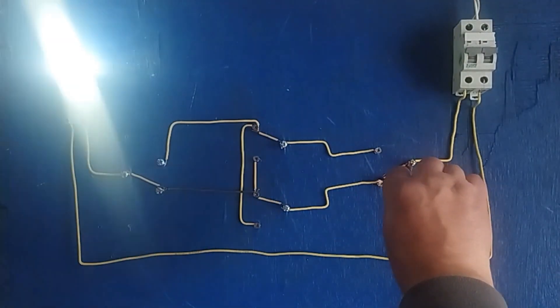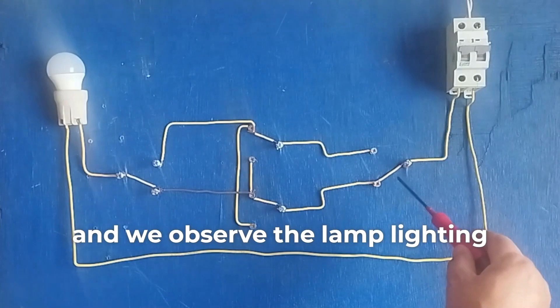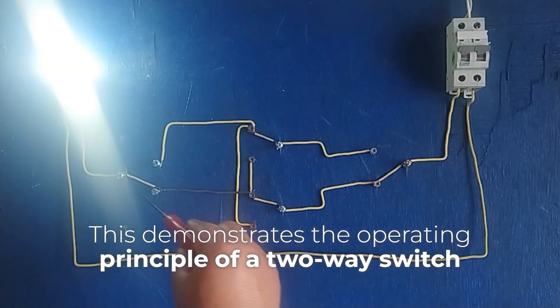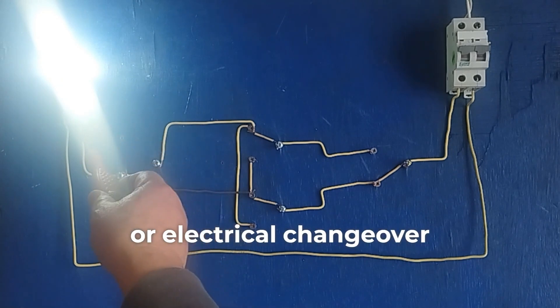This closes the electrical circuit and we observe the lamp lighting up. This demonstrates the operating principle of a two-way switch or electrical changeover switch.